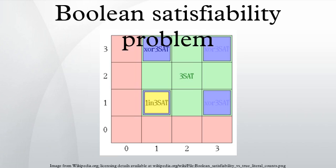In computer science, the Boolean satisfiability problem is the problem of determining if there exists an interpretation that satisfies a given Boolean formula. In other words, it asks whether the variables of a given Boolean formula can be consistently replaced by the values true or false in such a way that the formula evaluates to true.